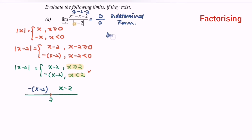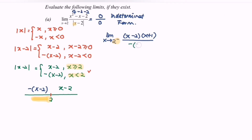So now, limit when x approaching 2 from the left. For the numerator, I'm going to factorize, and we will have (x minus 2)(x plus 1). Since our situation is approaching 2 from the left, referring to the definition, we pick the denominator as negative (x minus 2). After simplifying, we have the limit as x approaching 2 from the left of negative (x plus 1). Our answer will be equal to negative 3, meaning that the limit as x approaches 2 from the left, y approaches negative 3.